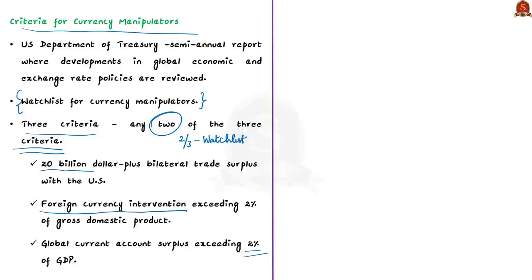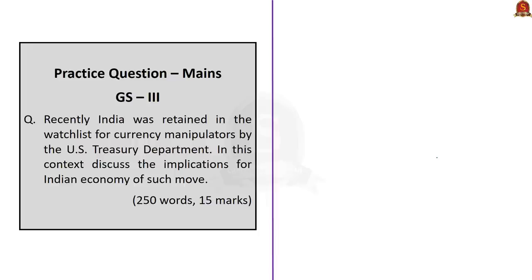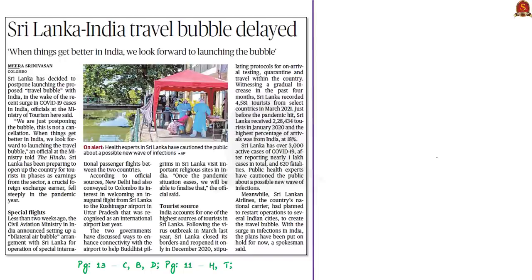Current account surpluses refer to positive current account balances, meaning a country exports more goods and services than it imports. When it comes to India, it meets two of the above three conditions, so it was placed on the watch list. Note that the designation of a country as a currency manipulator does not immediately attract penalties, but it tends to dent confidence about that country in global financial markets. So we have covered the currency manipulator watch list and criteria for its determination.